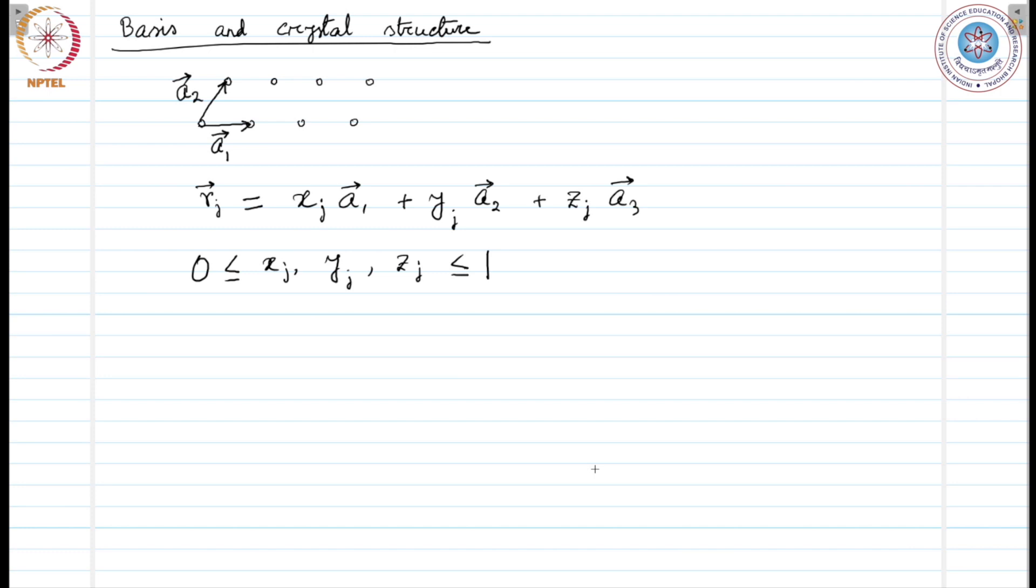So, what is the primitive unit cell? The parallelepiped defined by the primitive axis a1, a2, a3, that's called the primitive unit cell. A primitive cell is the minimum volume cell that we have said earlier.